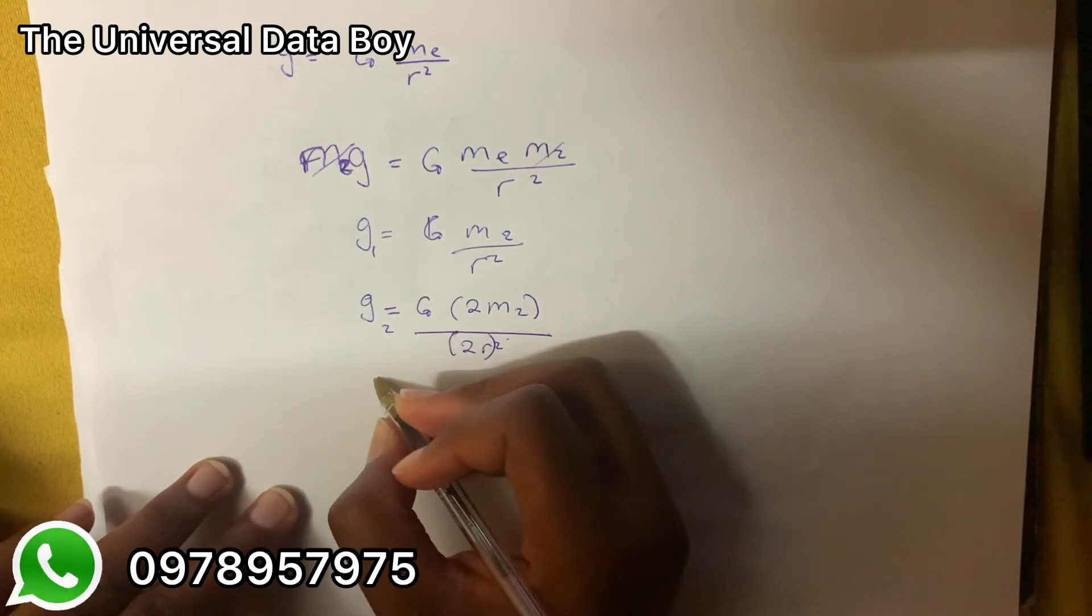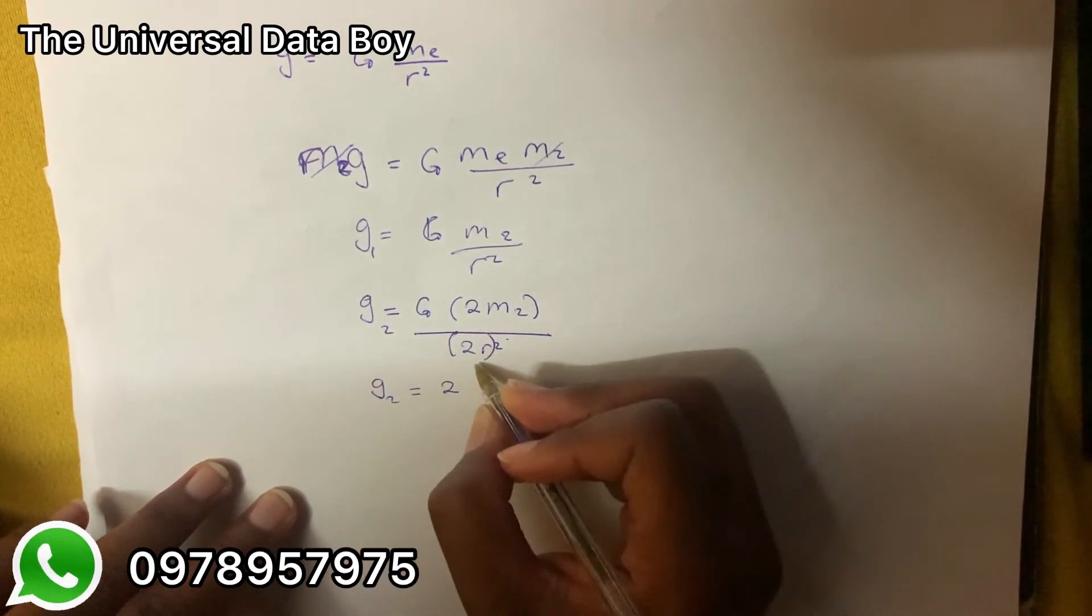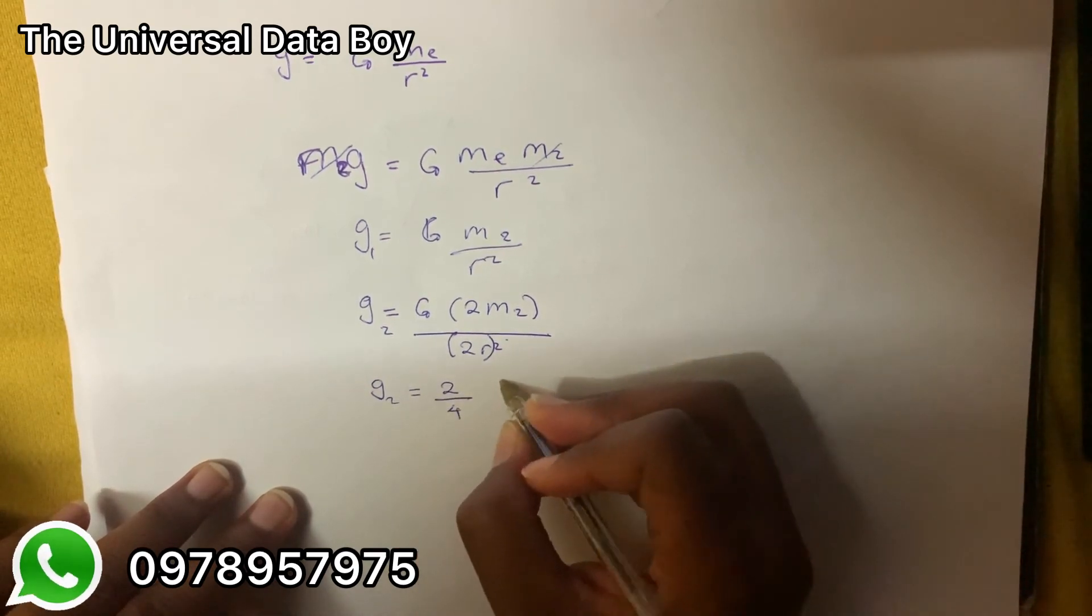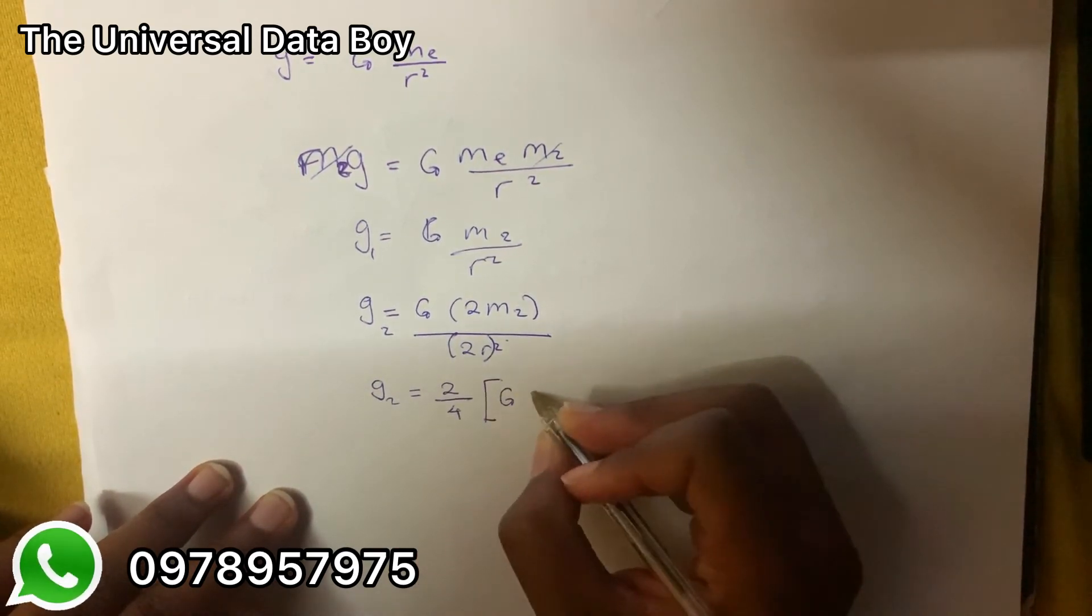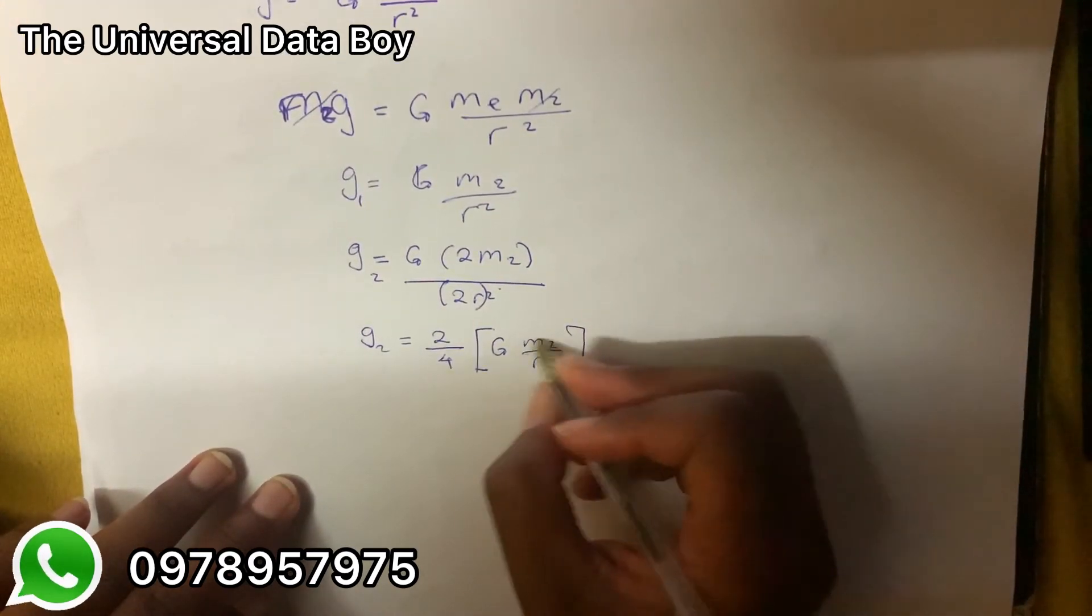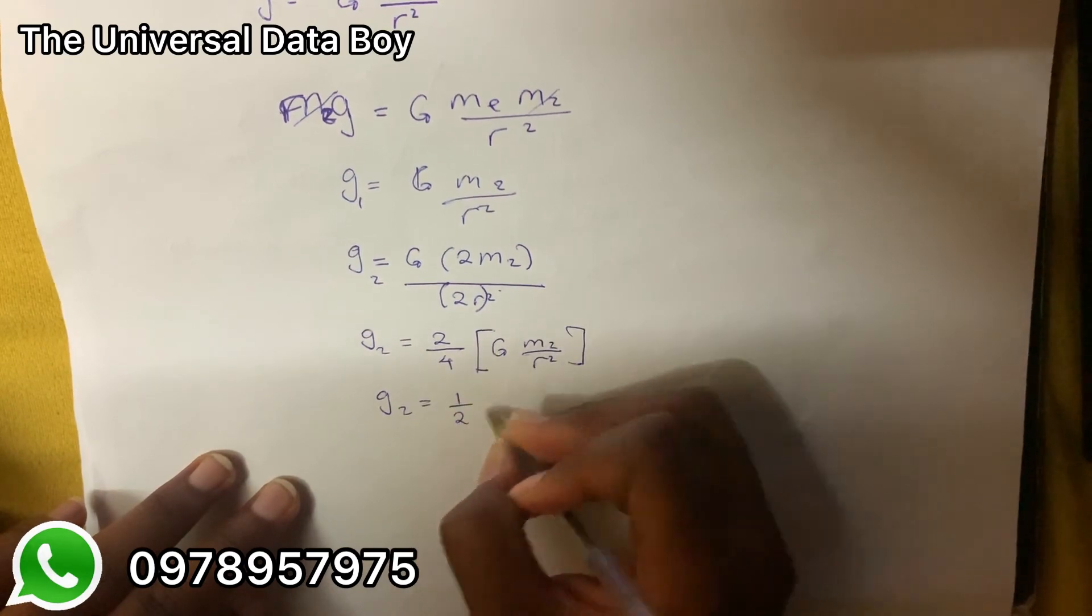Now g₂ is equal to, we'll have 2 over, when we square it, it will be 4, so over 4. Then we're going to have G m_e over r squared. You'll notice that this is just g₁, so we're going to have g₂ being equal to 1 over 2 of g₁.